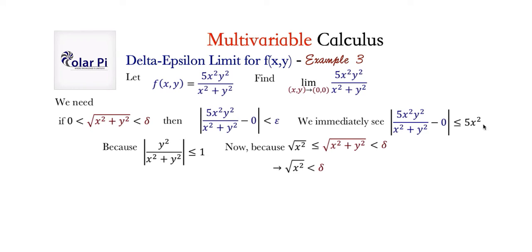If we can put a less-than here, we can compare and say epsilon has to be whatever this is — an expression involving delta. So it's clear that if you want x², once you have √(x²) < δ, you should square both sides and write x² < δ². Now we know x² < δ², and because of that the less-than-or-equal-to becomes a strict inequality on this side. So we can write that 5x² < 5δ².